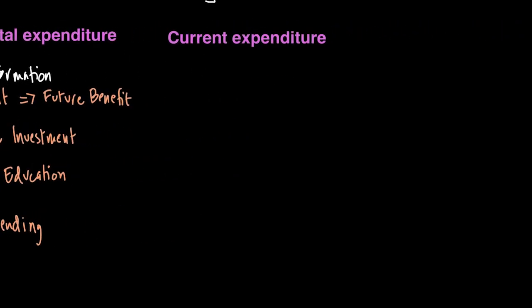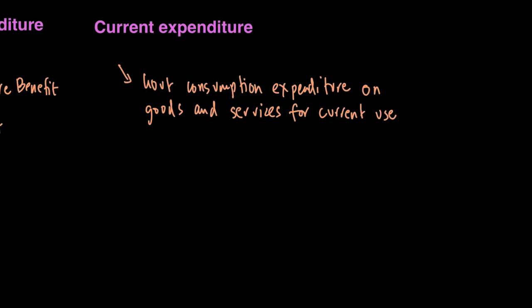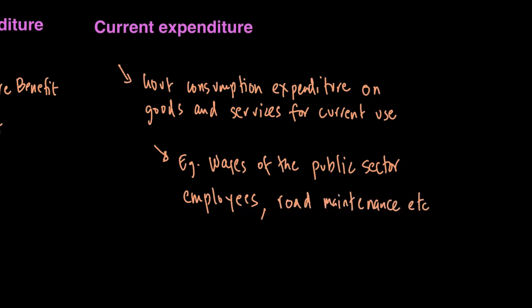On the other hand, current expenditure is the government consumption expenditure on goods and services for current use to directly satisfy the individual or collective needs of the community. For example, wages of public sector employees or road maintenance. This is expenditure that does not result in investment for the future but is used for current consumption.